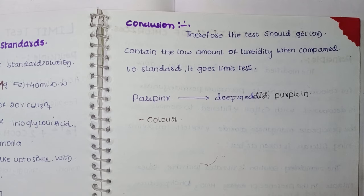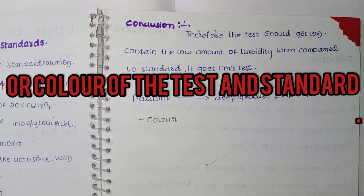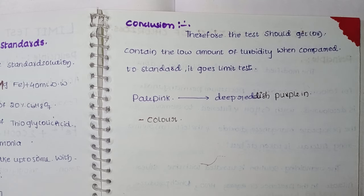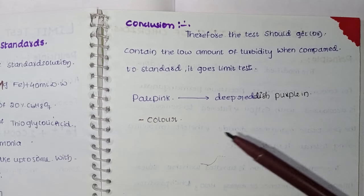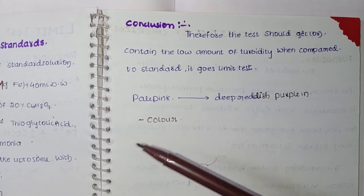For the conclusion: Compare the turbidity or opalescence between the test and standard. If the turbidity in the test is less than the standard, then it passes the limit test and there are no impurities - it's better than the standard. The color is important to note in the reaction. Write about the standard solution used and write the conclusion. The color changes from pale pink to deep reddish purple. Remember this: pale pink to deep reddish purple in color.